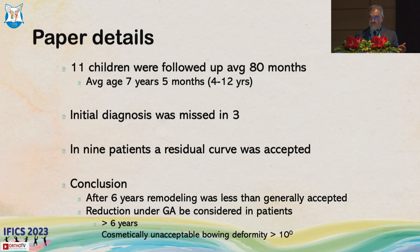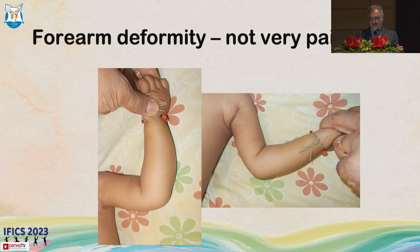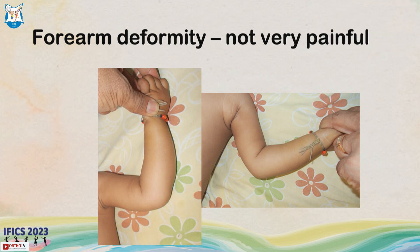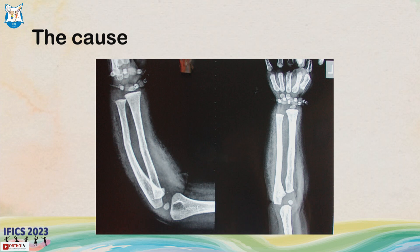Reduction is required for patients who are more than 6 years old and in whom there is a cosmetically visible deformity or when there is angulation more than 10 degrees. As mentioned earlier, if there is an ulnar deformity it will look grossly odd and you need to do something about it. This is a plastic deformation of both bones, but the ulnar is more prominent here.